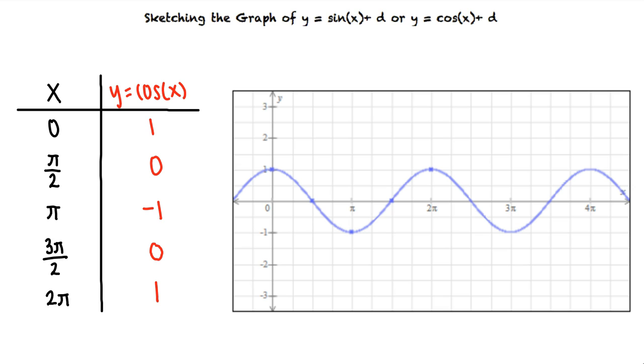We see that the function completes one cycle as x ranges from x equals 0 to x equals 2 pi. So the key points correspond to the x-intercepts, minima, and maxima within one cycle of y equals cosine of x, and we note that the midline of the graph is the horizontal line, y equals 0.